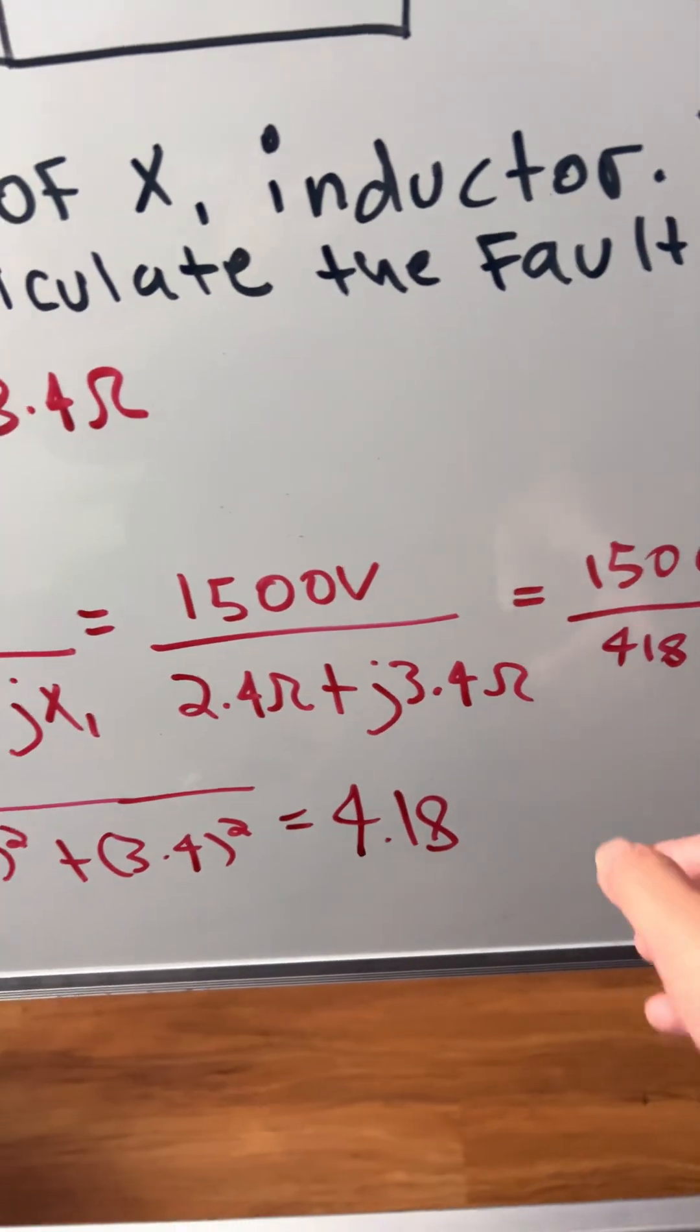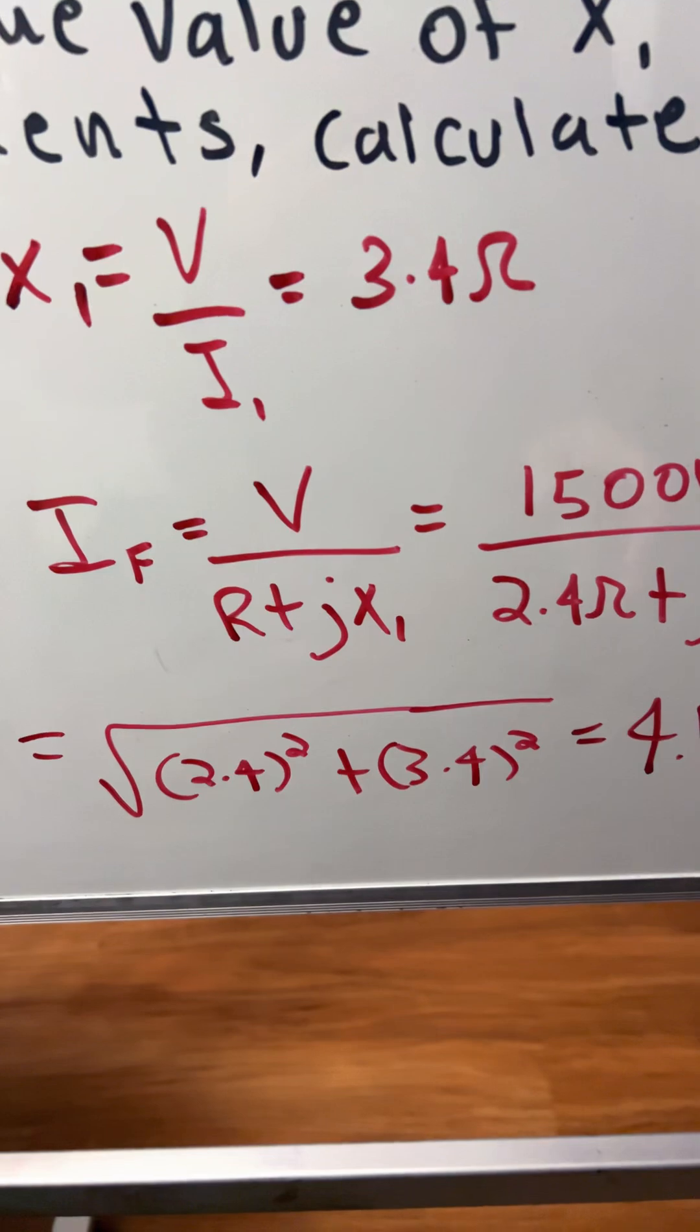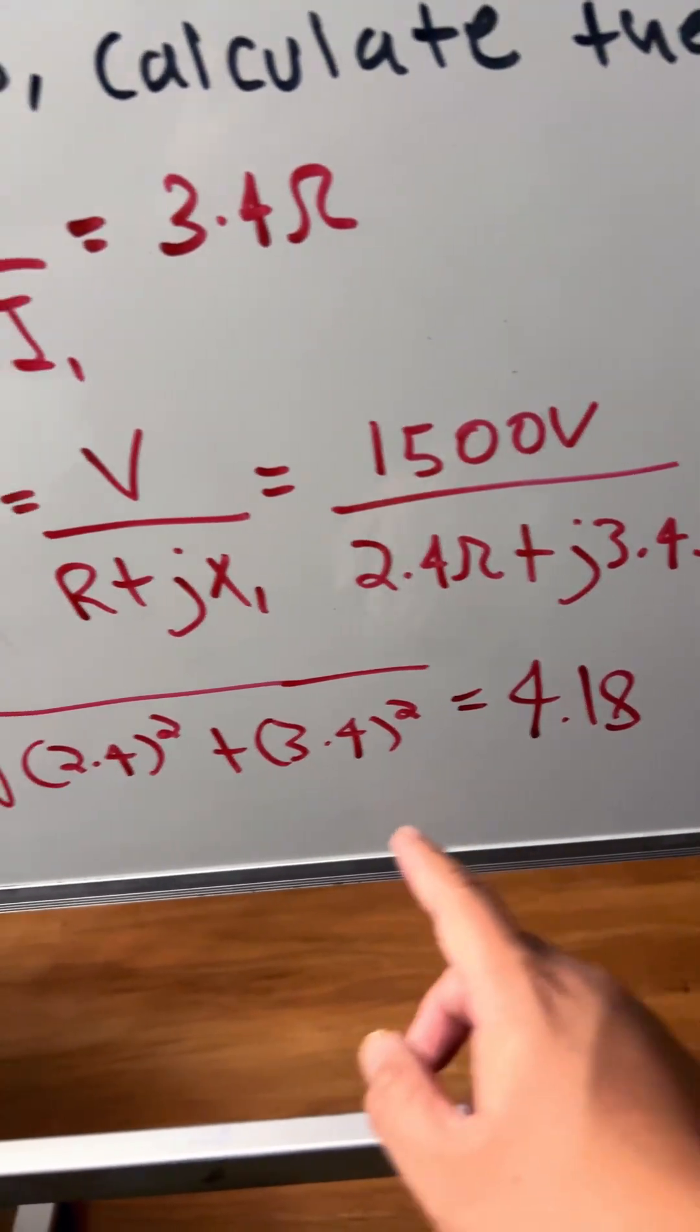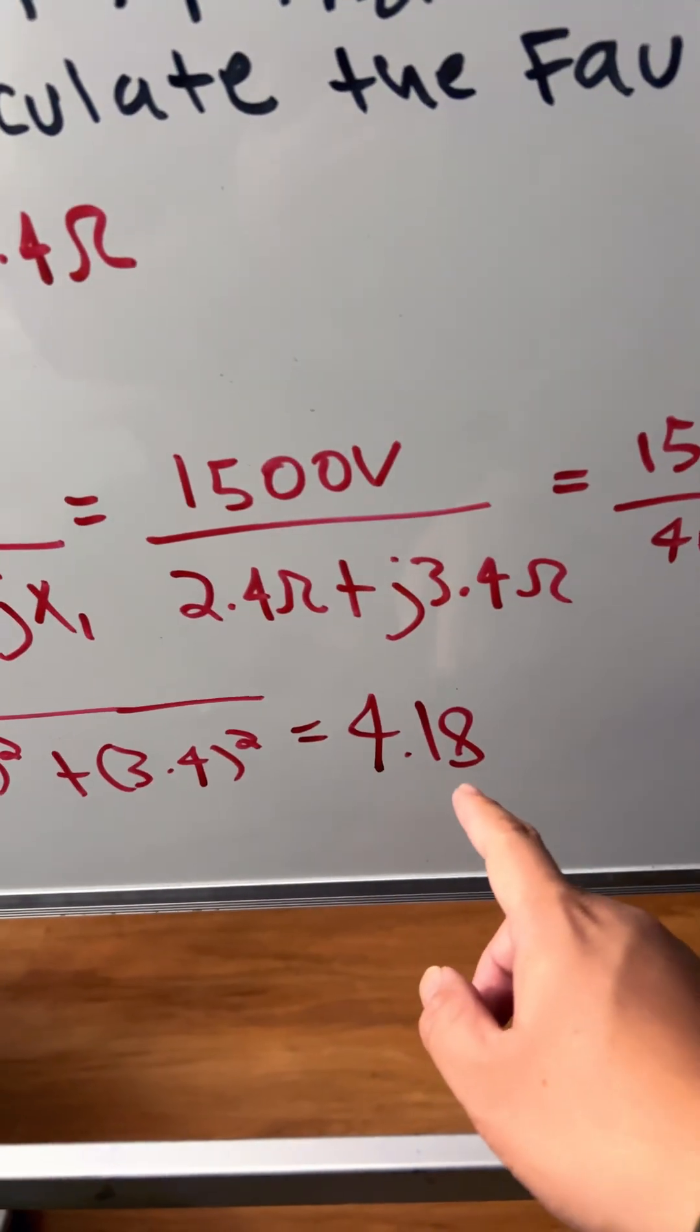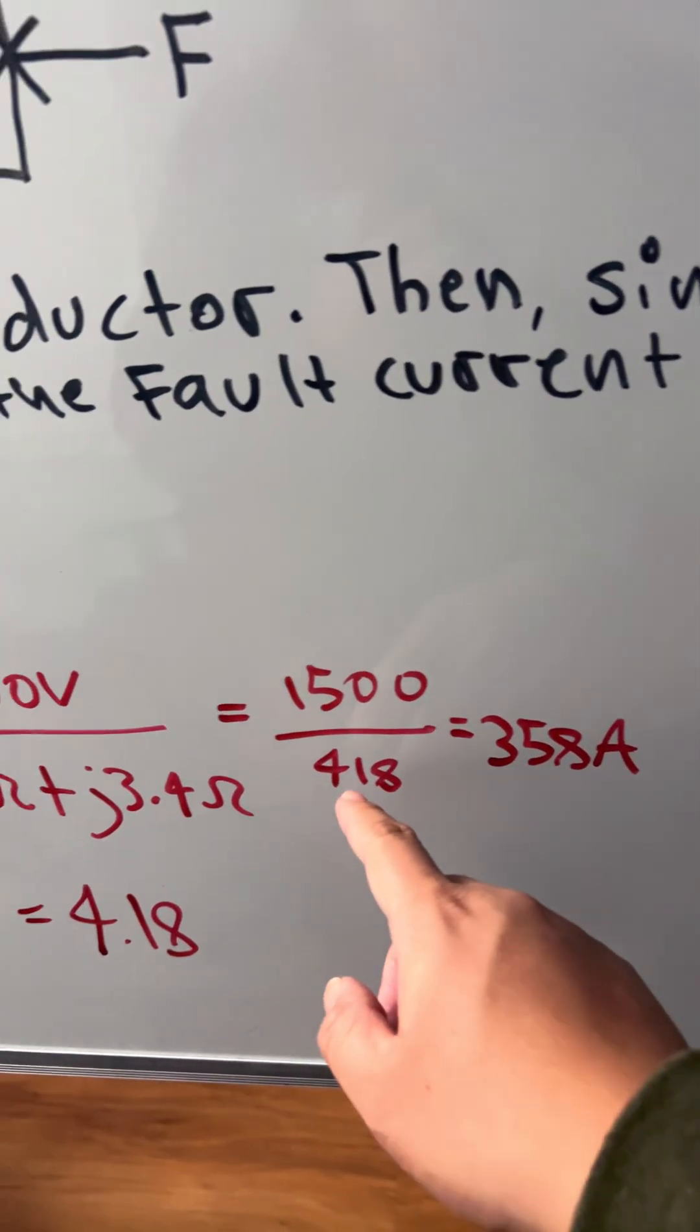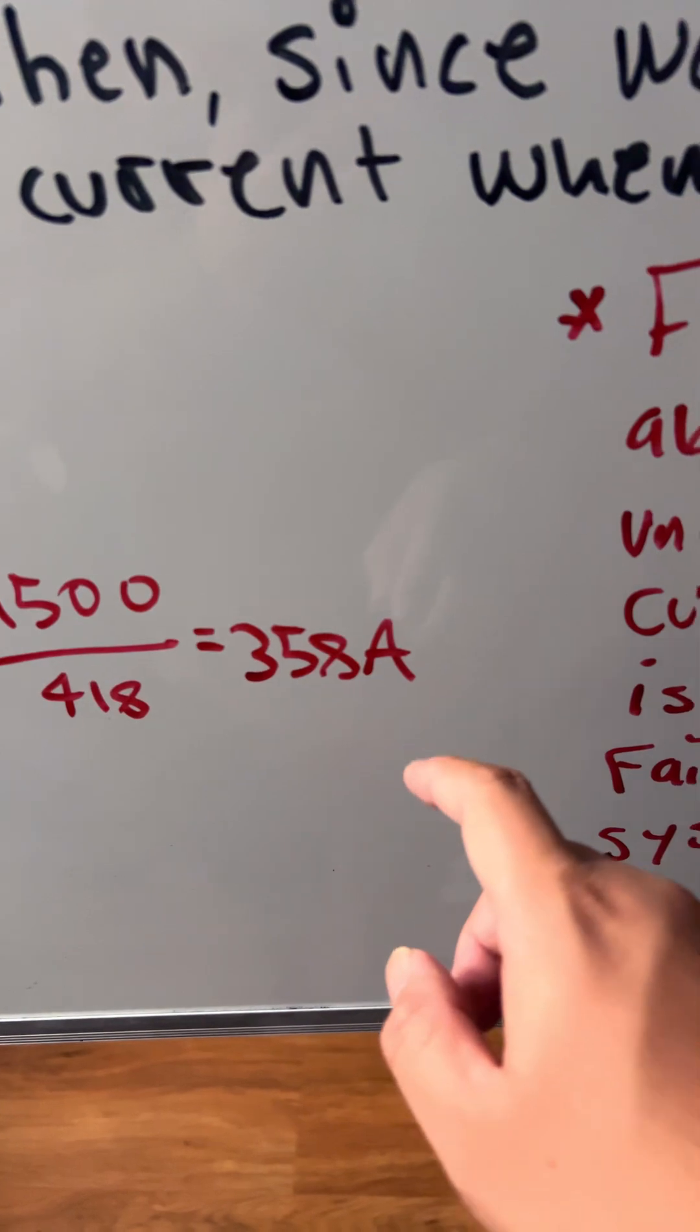In order to solve for this, we take the magnitude. So 2.4 squared plus 3.4 squared, then we do the square root, we get 4.18. So 1500 volts divided by 4.18, and that gives us 358 amps.